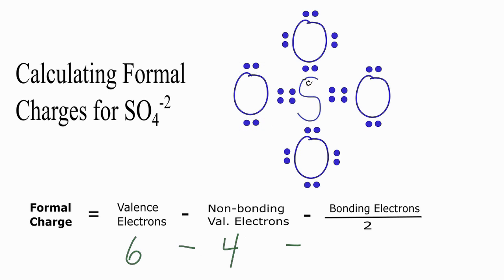And then the bonding, we have these four right here between the sulfur and the oxygen atom. So 4 divided by 2, so 6 minus 4, that's 2 minus 2, that equals 0. So the formal charge on this oxygen right here is 0, and we'll put that in parentheses.